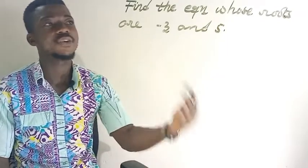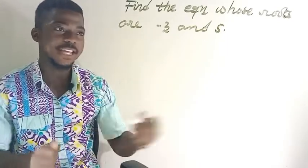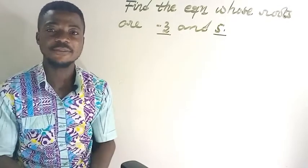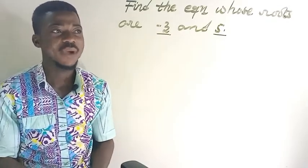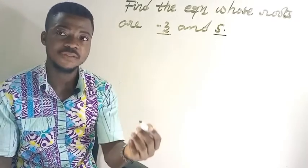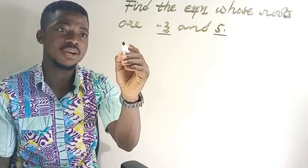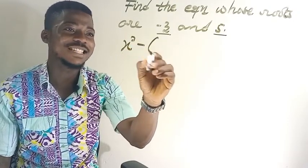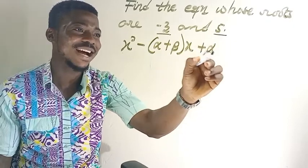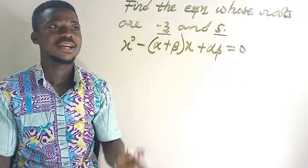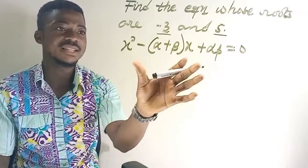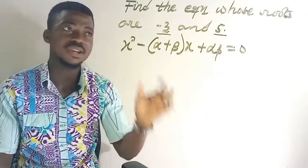This question asks us to find the equation whose roots are -3 and 5. Now, given that an equation has roots alpha and beta, the control equation is: x² − (α + β)x + αβ = 0. We're going to use this control equation to get the actual equation the question is asking for.